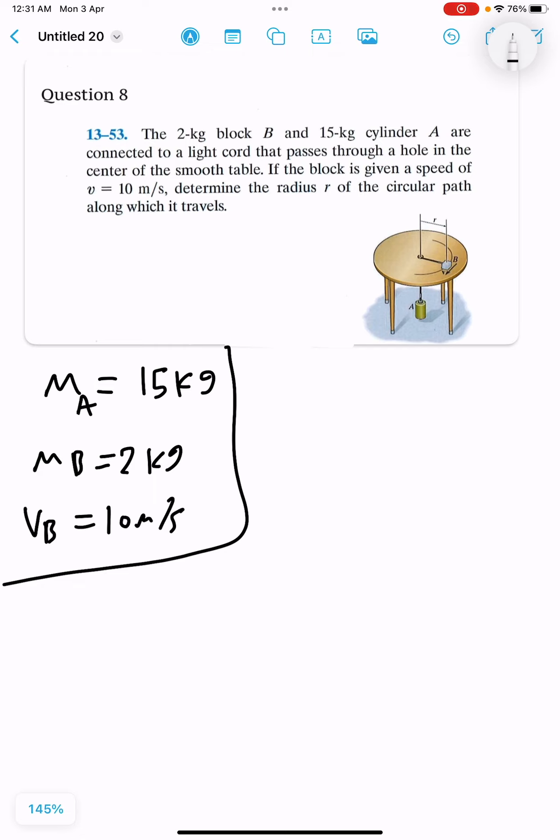First, I will draw the free body diagram for cylinder A. For cylinder A, we have tension and we have weight.